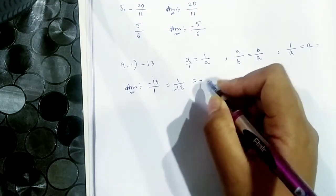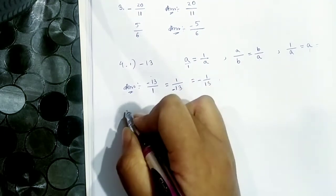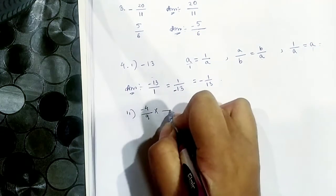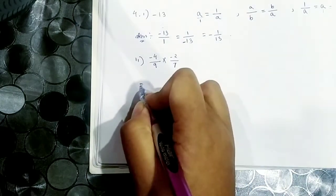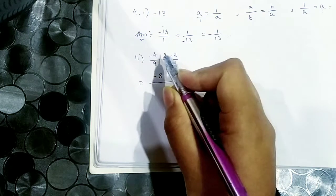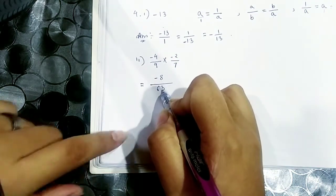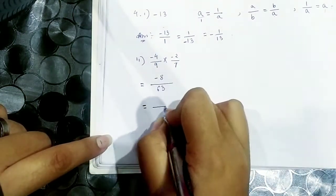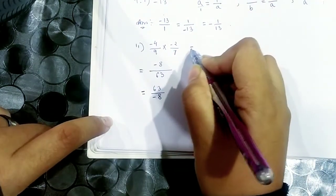So the one that I will add: minus 2 by 2 is minus 1 by 13. So 22d is minus 2 by 9 into minus 2 by 7. This is minus 2 into minus 4, which is minus 8, and 9 into 7 is 63.